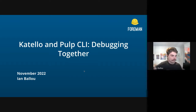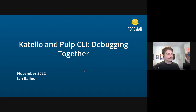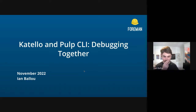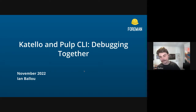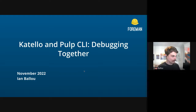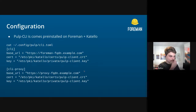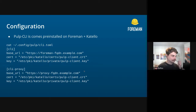I realized as I was writing this presentation that I would call us medium-level power users of Pulp CLI. A lot of times when we're debugging it looks something like 'pulp show --href', copy this from our database and take a peek. But there are times when we do more complicated things. I'd be curious if after hearing this any of you Katello folks have other input on how to use Pulp CLI.